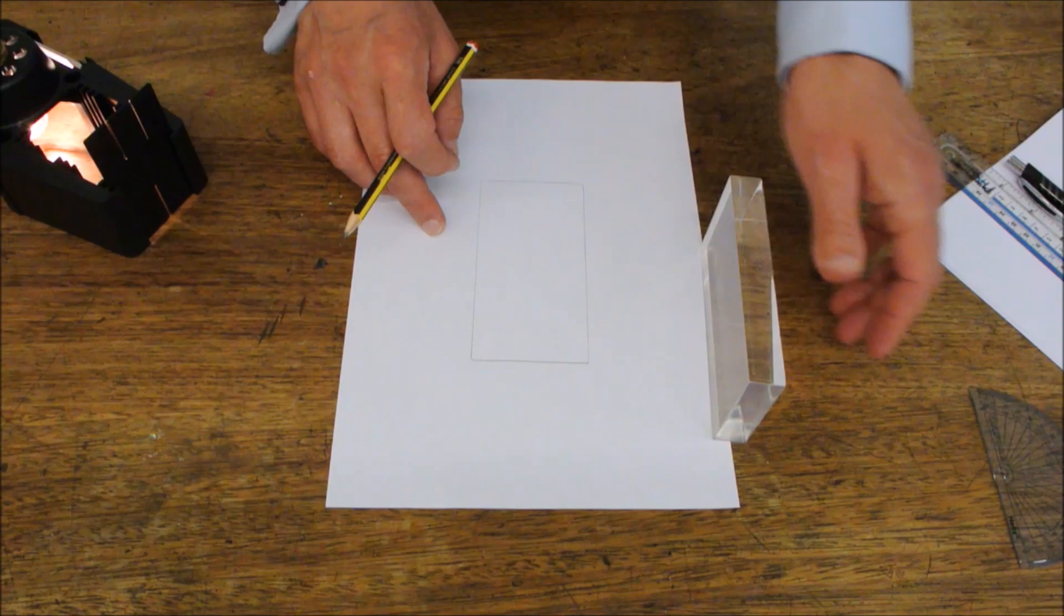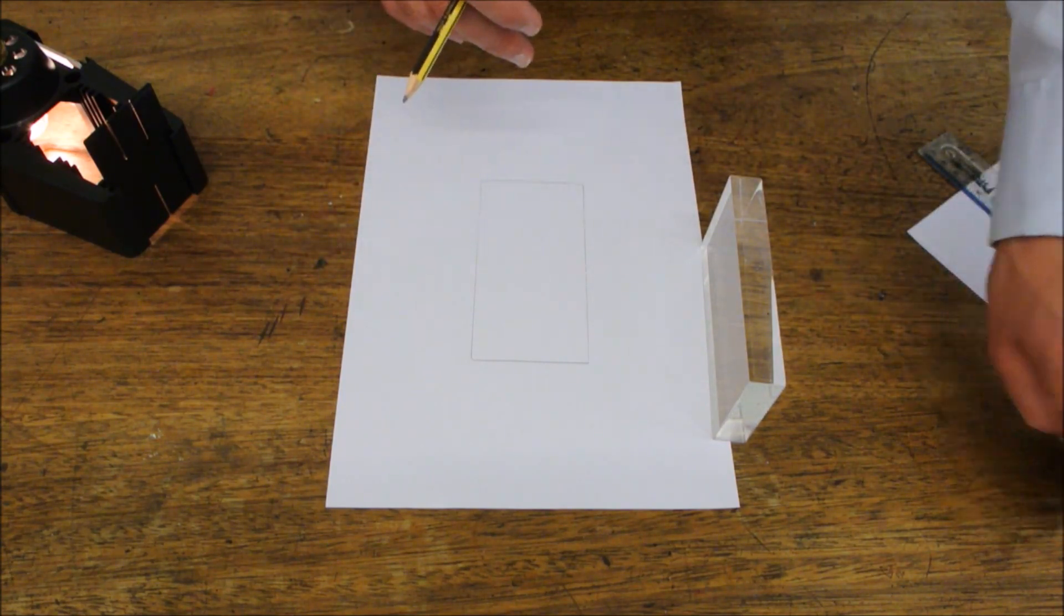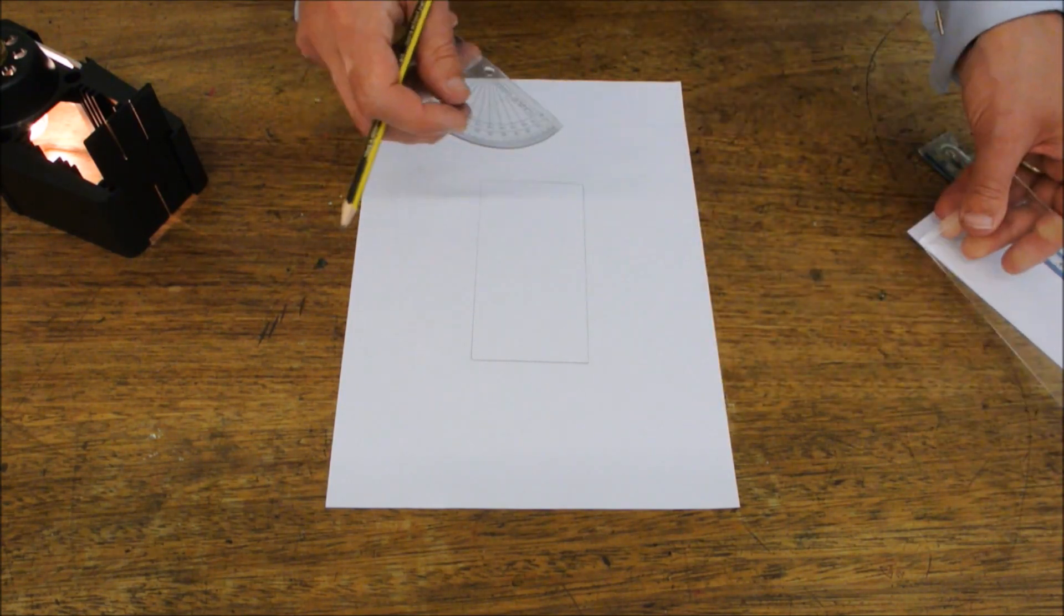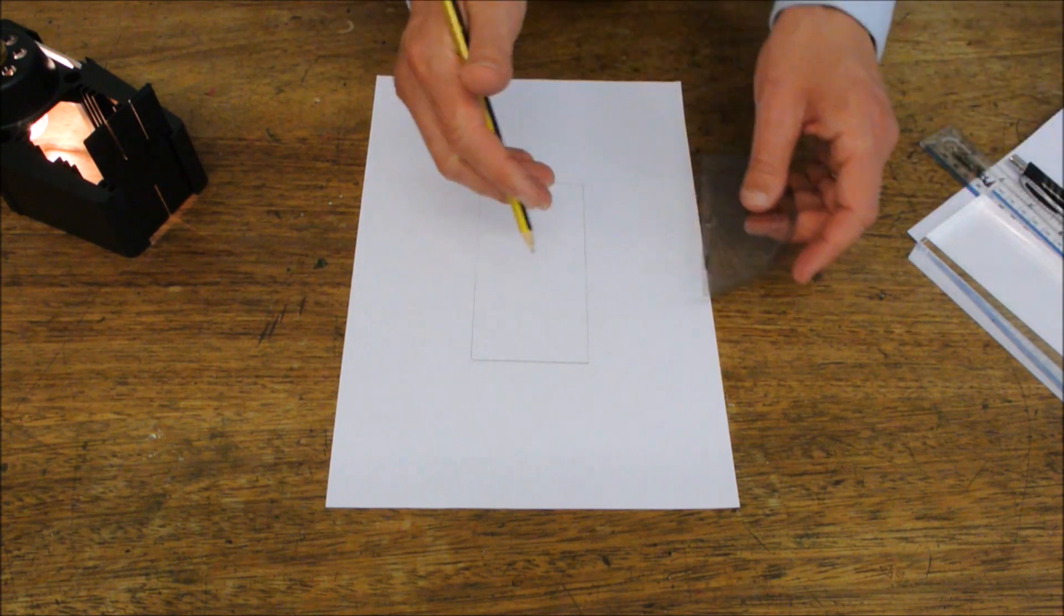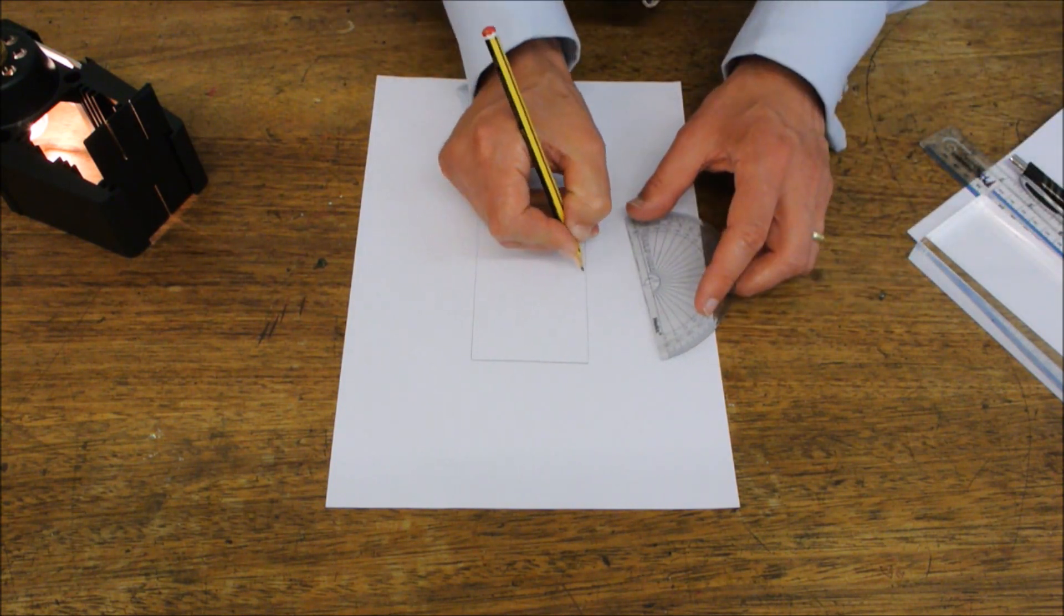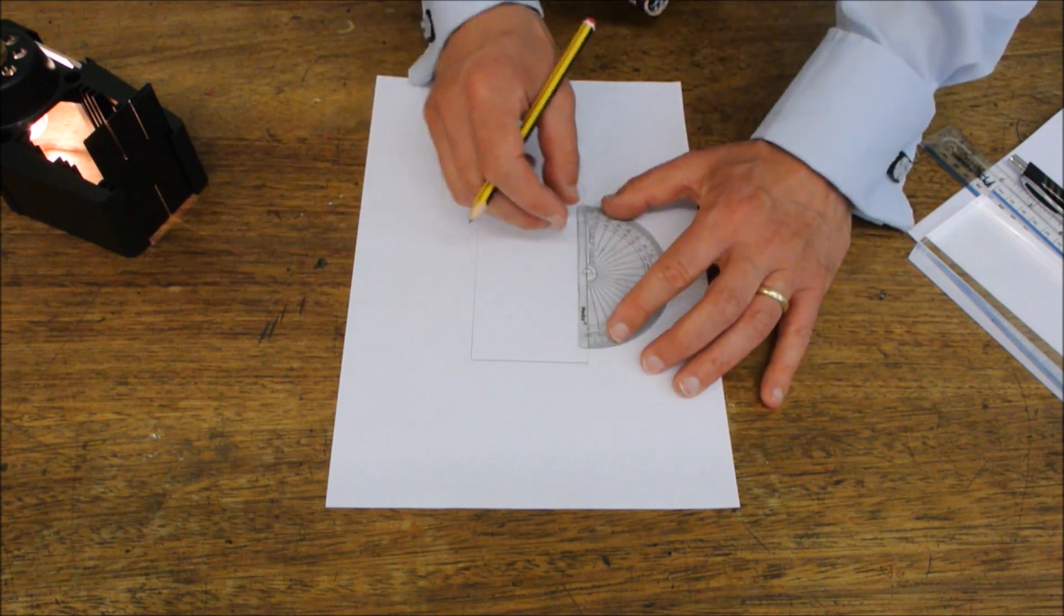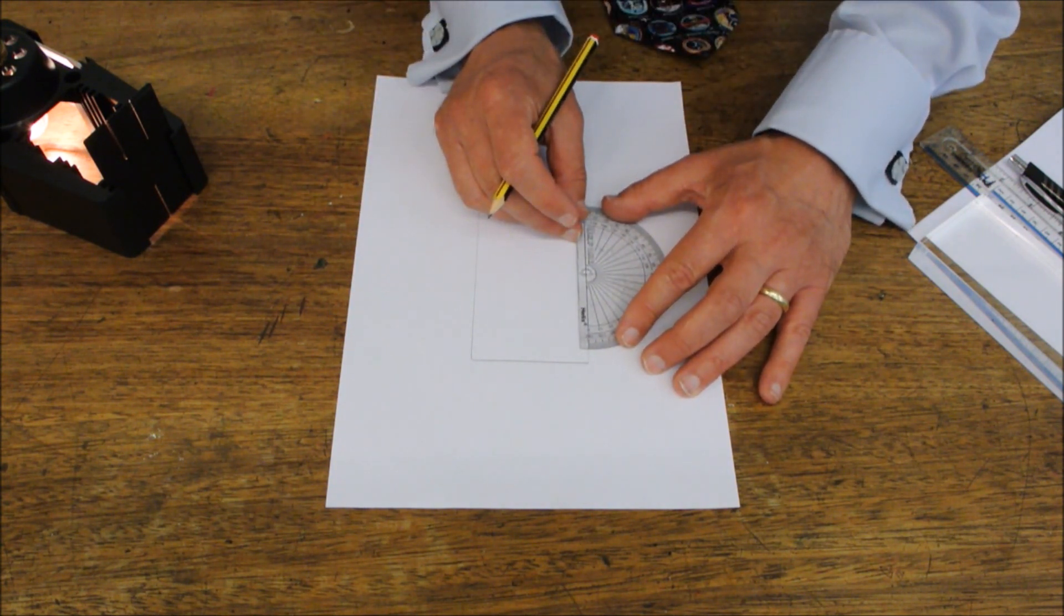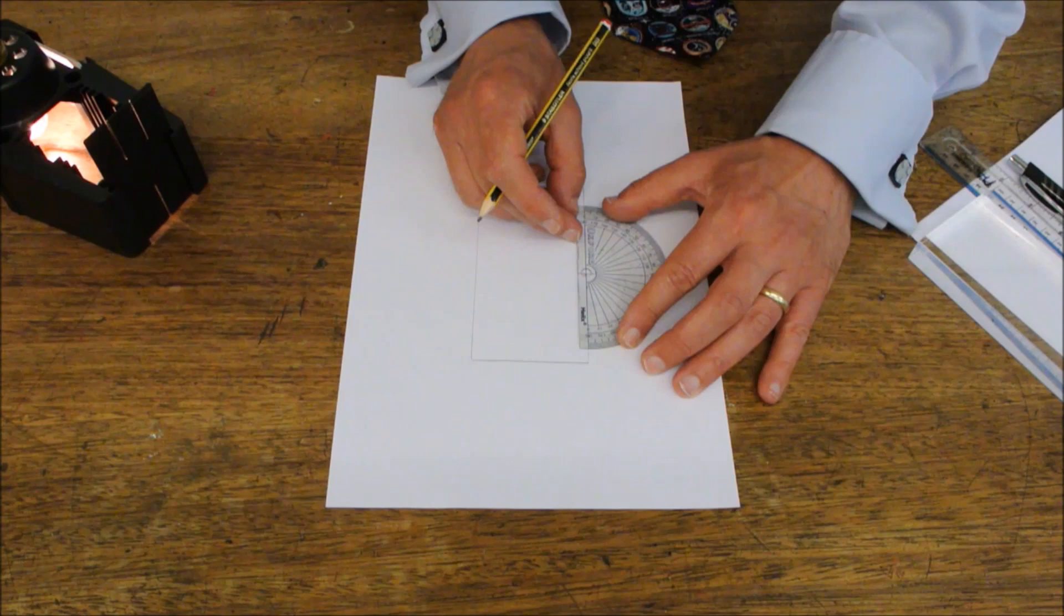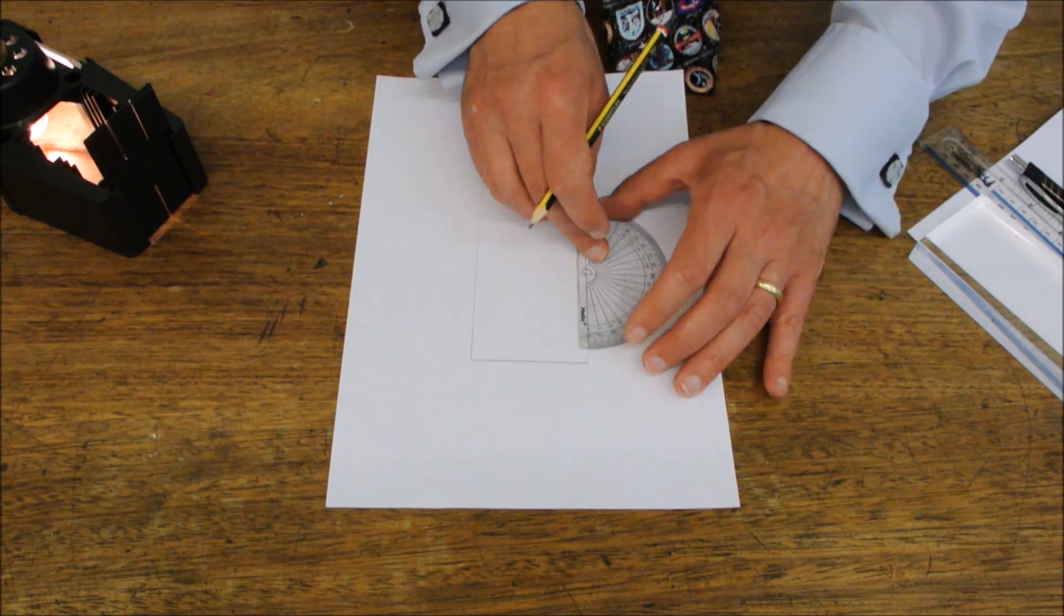And then take that away just for a moment and you want to draw what's called a normal line to one edge here. So place a marker approximately the centre of that side. Using a protractor, draw a line at 90 degrees to that point.